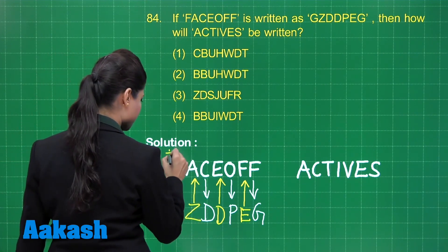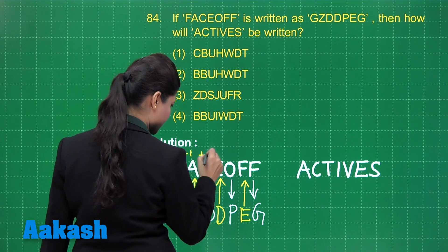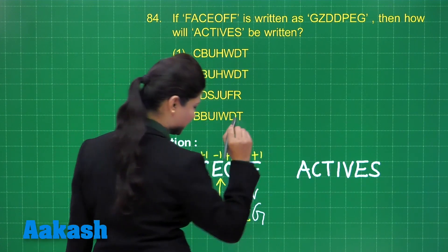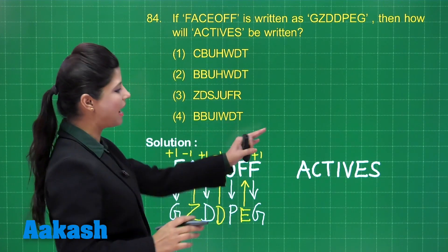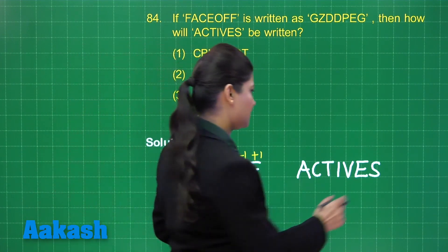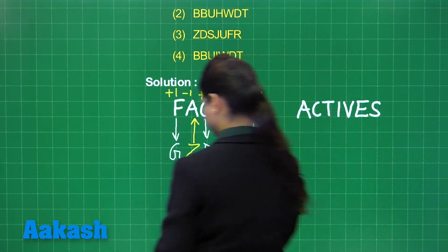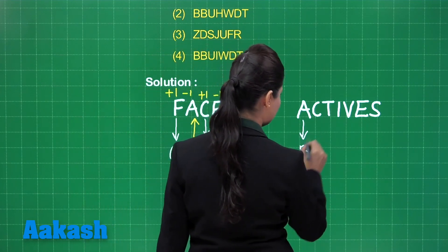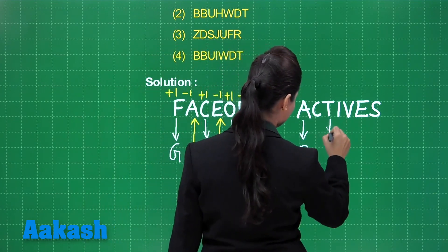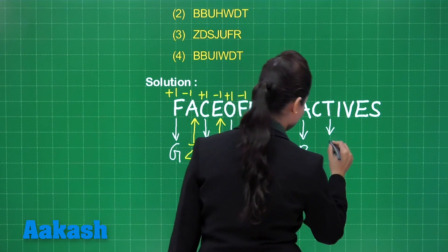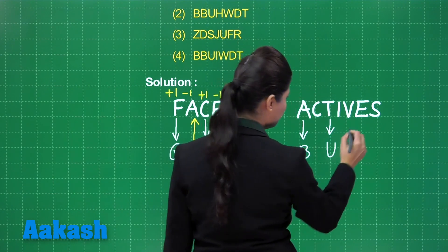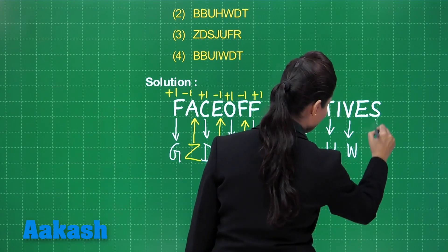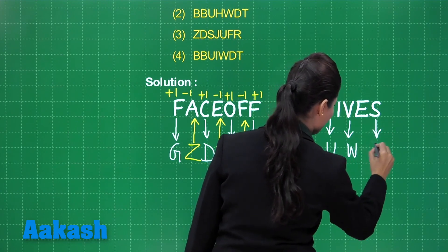You can consider this as plus 1, minus 1, plus 1, minus 1, plus 1, minus 1, then plus 1. The same pattern will be followed for 'actives'. So: A is followed by B, then T is followed by U, V is followed by W, S is followed by T. Similarly, B is followed by C, H is followed by I, and D is followed by E.